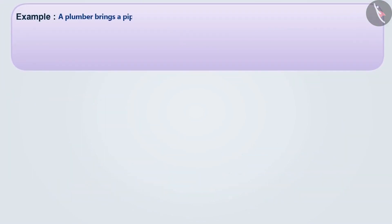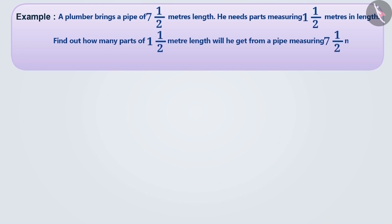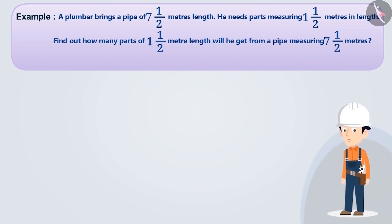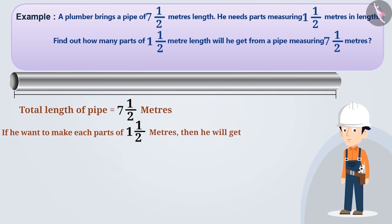A plumber brings a pipe of seven and a half meters in length. He needs pipe parts measuring one and a half meters in length. Find out how many parts of one and a half meter length will he get from a pipe of seven and a half meters. The total length of the pipe is seven and a half meters. If he wants to make parts measuring one and a half meters, then he will get seven and a half divided by one and a half parts.